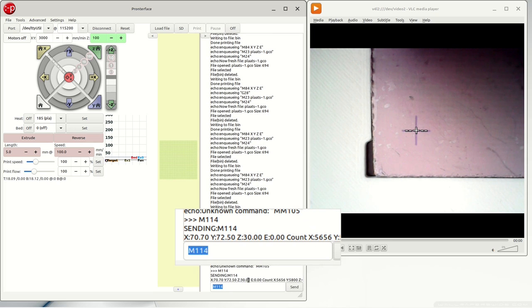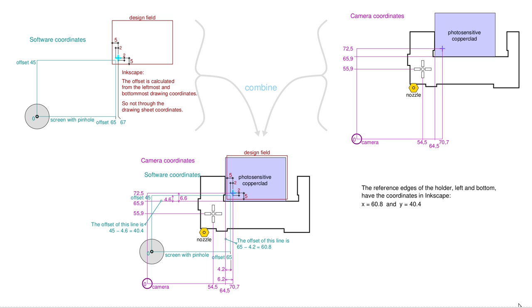Place the cross-line coordinates from Inkscape, the left feature, and the coordinates measured by the camera, the right feature, of each other, the feature below. From this the necessary offset coordinates for Inkscape can be calculated.